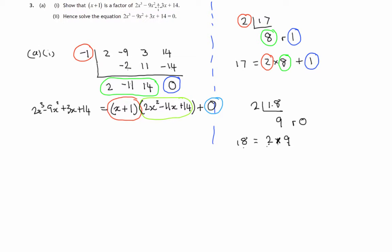So we should state that since the remainder is 0, then x plus 1 is a factor of the polynomial 2x cubed minus 9x squared plus 3x plus 14. So that's part A. Let's move on to part A, part 2.